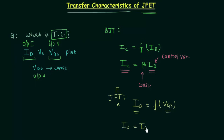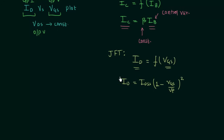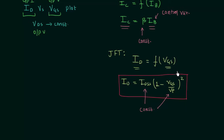Shockley's equation states: ID equals IDSS times (1 minus VGS divided by VP) squared. Here IDSS is the maximum drain current and VP is the pinch-off voltage — both are constant quantities. VGS, the gate-to-source voltage, is the control variable. This is an important relationship and you will have direct exam questions based on it.